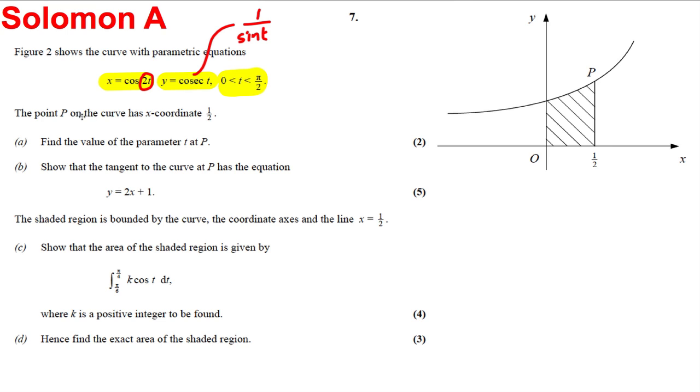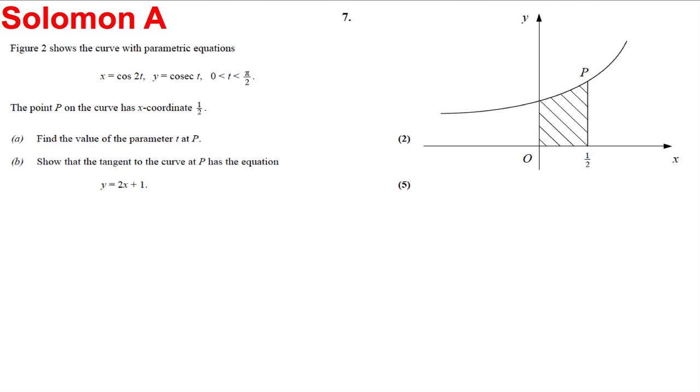The point P is on the curve where X is a half, so when X is a half you could find t and then find the Y that goes with it. Show that the tangent to the curve at P has that equation. And then the shaded region is as follows, we're asked to show that the area of the shaded region is as follows, and then find the area. Let's give this a go. So the first part, clearly at P, X equals a half. We know that from the diagram.